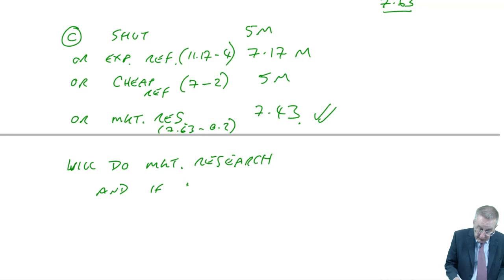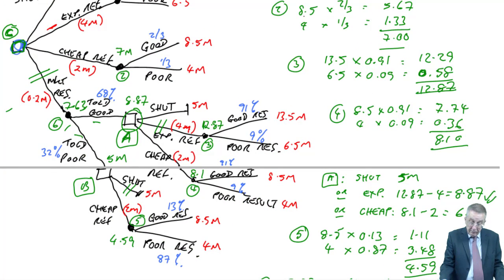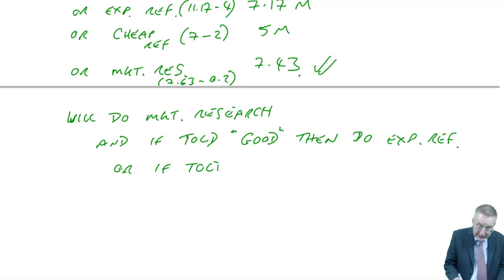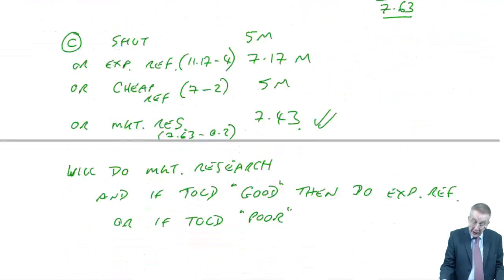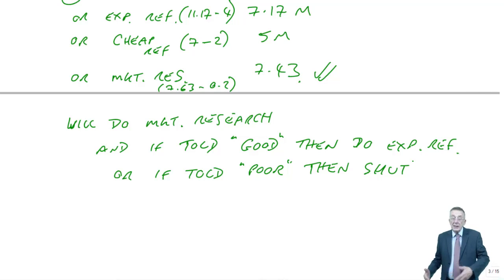Although strictly, the full answer is this. We will do market research. I hope you're clear why. But remember, because we're doing market research, there is another decision we'll have to be made later, depending on what they tell us. And so the full answer, we should really write that down. And they give us two answers. So, if we're told good, then what would be the decision? We'd carry on and do the expensive refurbishment. Or, if told poor, what will we do? If they told us poor, we'd decide to shut. So there's the full answer. The decision we make now, together with any future decisions.